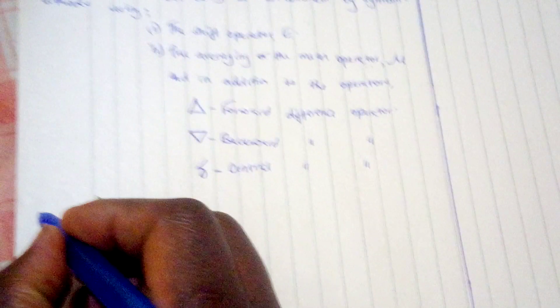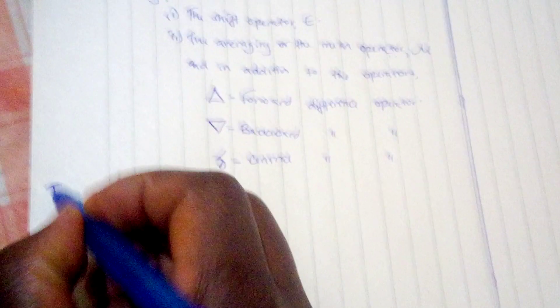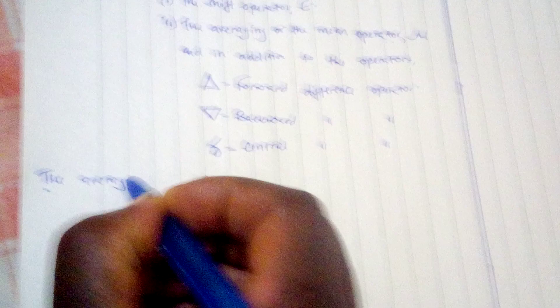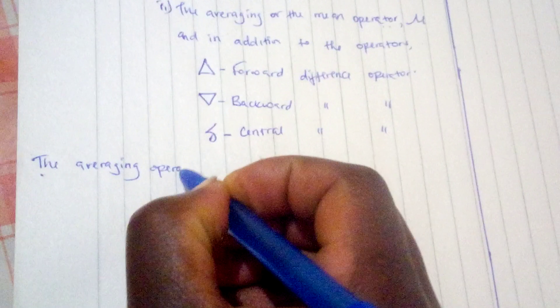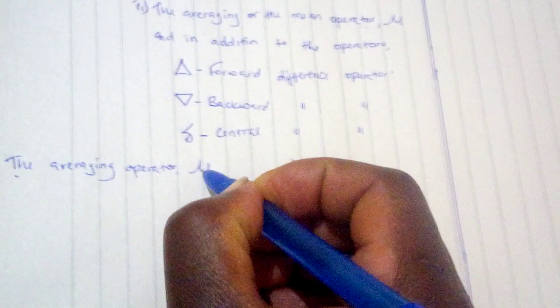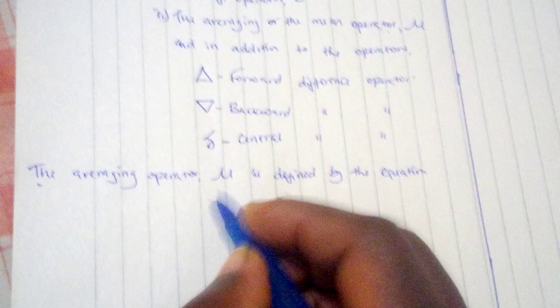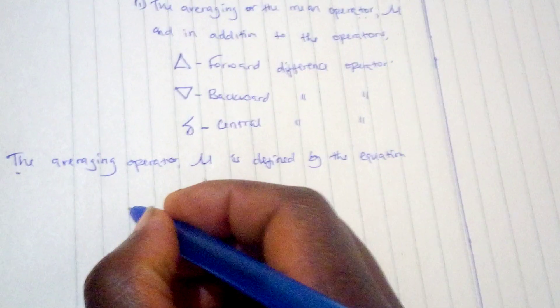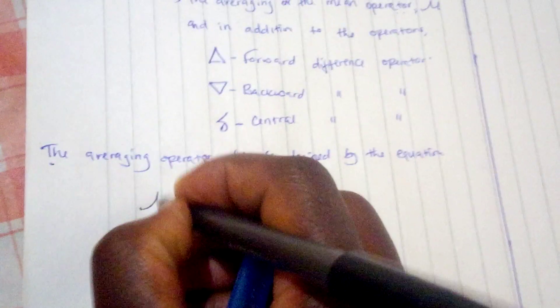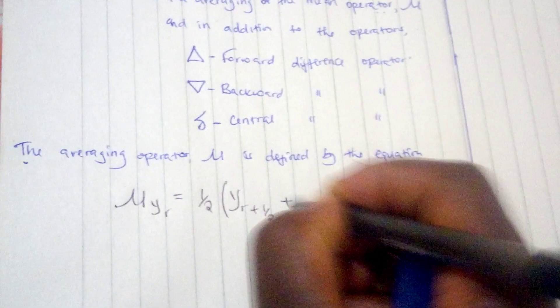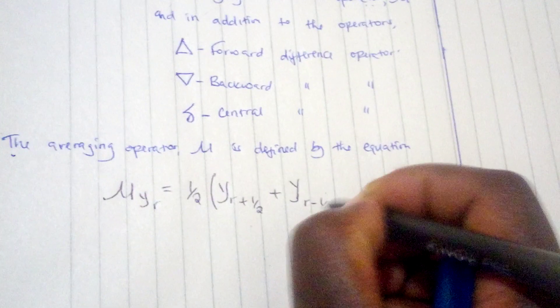The averaging operator mu is defined by the equation: mu y_r = (1/2)(y_{r+1/2} + y_{r-1/2}).